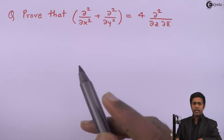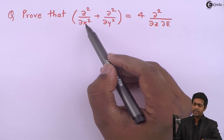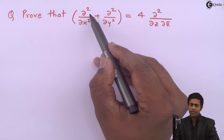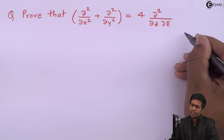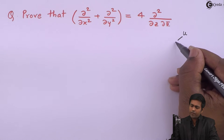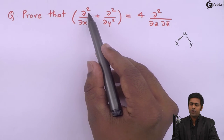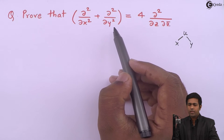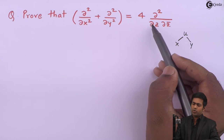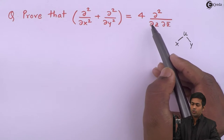If we observe the left-hand side, we have second order differentiation with respect to x and then with respect to y. Since no specific function is given, we will assume a function u. So u must be a function of x and y, because then only we can get the values of ∂u/∂x and ∂u/∂y. We have to prove it is equal to 4 times ∂²u/∂z∂z̄.